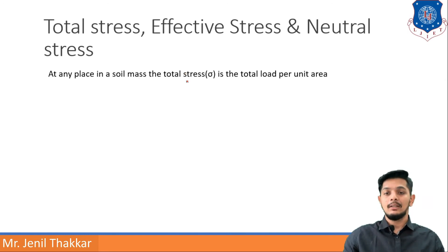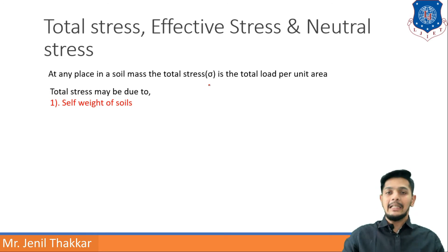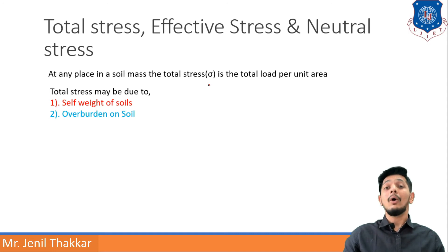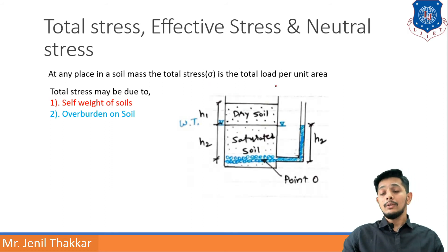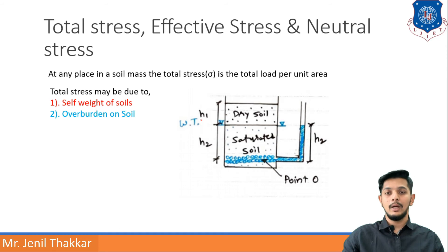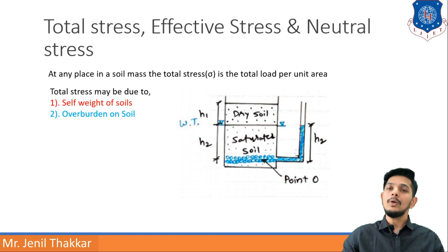Total stress, sigma, at any place in the soil mass is the total load per unit area. Total stress may be due to two reasons: self-weight of the soil and overburden on the soil, such as large buildings. The figure shows two portions — a top dry soil layer of height h1 and a saturated soil layer of height h2, with the water table shown as a triangle.